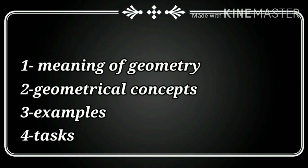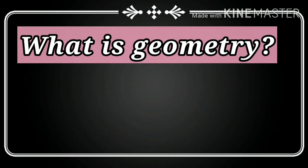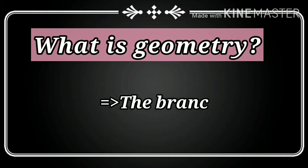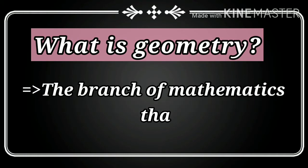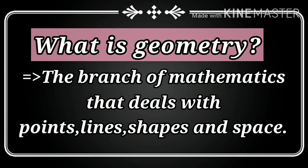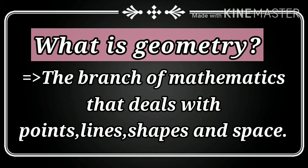First of all, we will learn about the meaning of geometry. Geometry kia hai? The branch of mathematics that deals with the points, lines, shapes, and space. Mathematics ki aysi branch jho points se, lines, shapes, or space se deal karti hai.